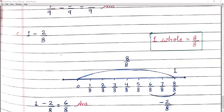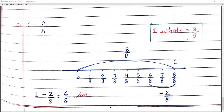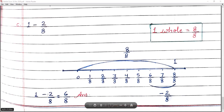Question C: one minus two upon eight। One means whole number — denominator eight है, तो whole number eight upon eight। Straight line draw करेंगे zero से eight upon eight means one तक, equal parts में। Line के ऊपर zero से eight upon eight तक mark करेंगे। फिर नीचे eight upon eight से left side दो steps: one, two — six upon eight तक पहुंचे। As a fraction: eight upon eight minus two upon eight equals six upon eight.